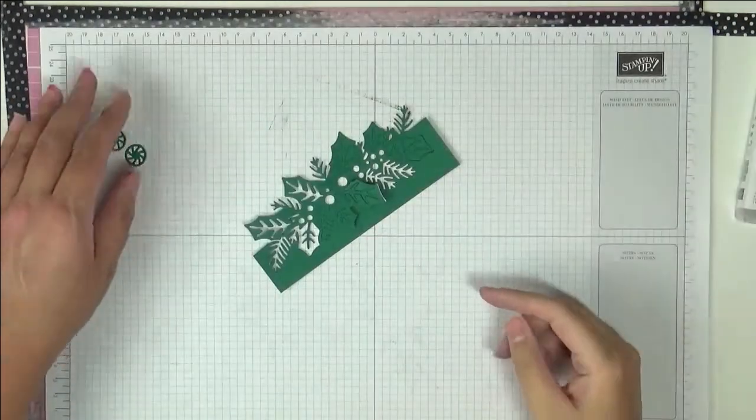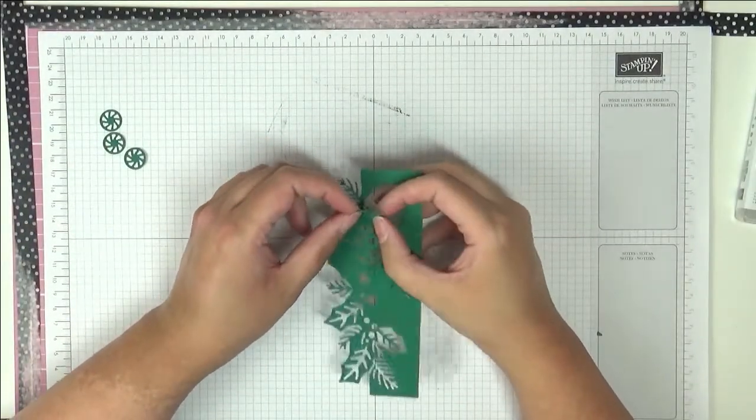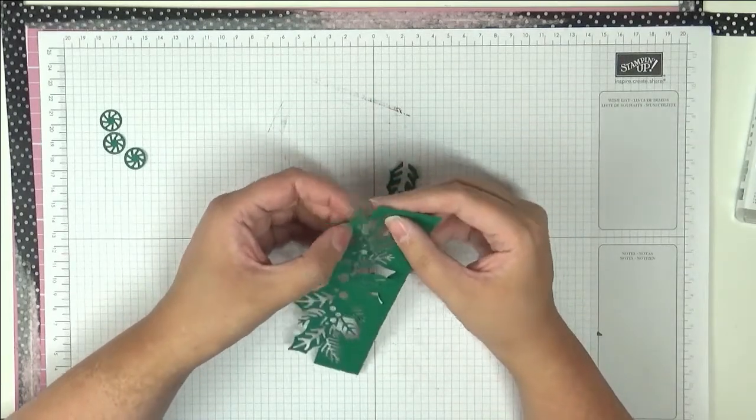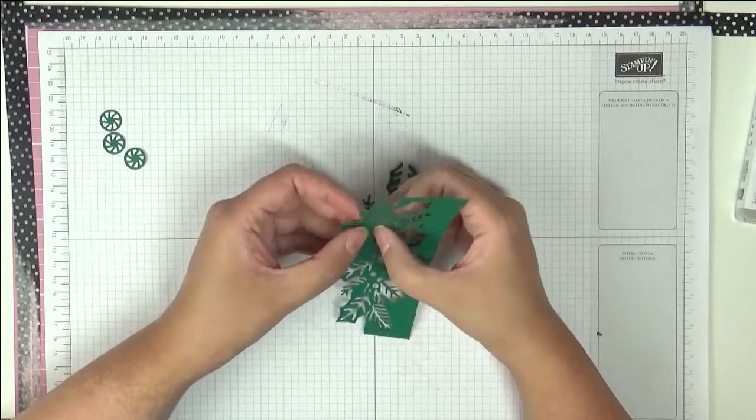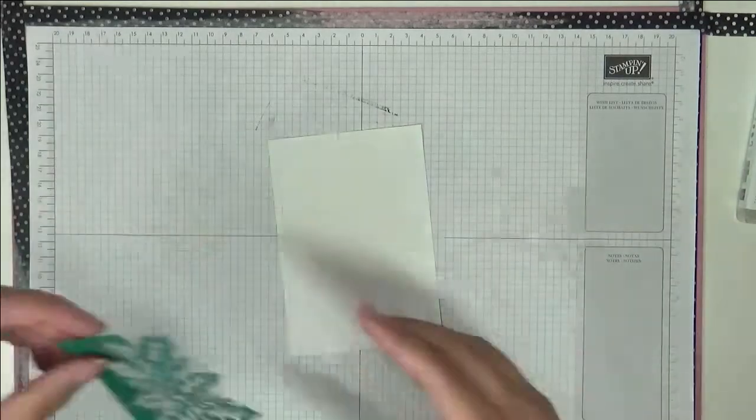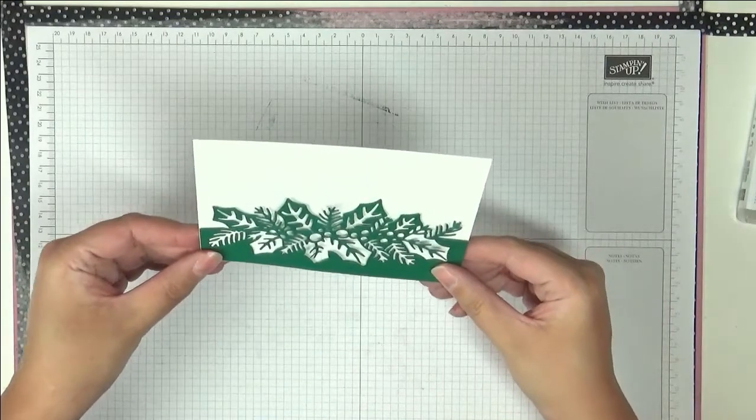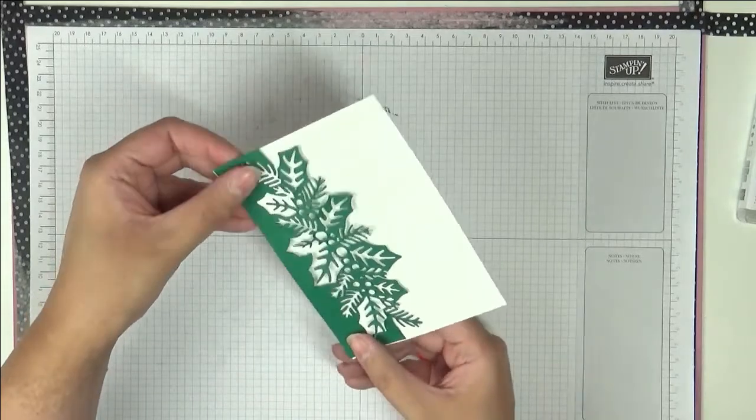We've cut out our little bits and this is our die cut. So we just need to ease it out a little bit. Just a bit delicate, so don't rush it. Just take your time to ease out all these little bits. Bring back our piece of Whisper White. This Whisper White measures 14.35 centimeters by 10 centimeters.